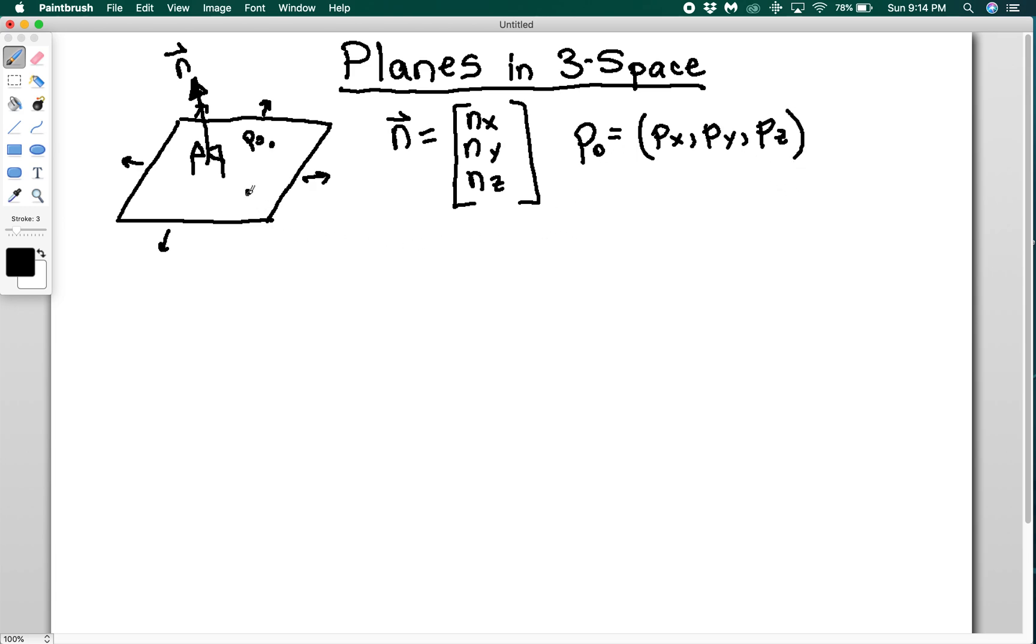So to get the equation of a plane, I'm going to make another point over here, and this is going to be point p. This is a variable point. So p I do not know, and p is going to be x, y, and z. So in the previous video, we talked about dot product. And one of the properties of dot product that we mentioned was that if I take the dot product of two perpendicular vectors, it should be 0. So if I draw a vector that goes from p0 to p, and I dot it with a normal vector, well, that should be 0.